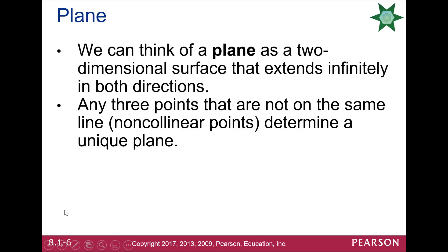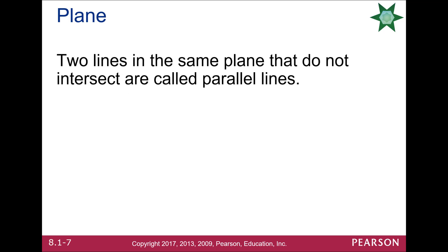A plane is two dimensions, extends indefinitely in both directions. Any three points that are not in the same line, what we call non-collinear, form a plane. So AB and C here. Like I said, this is your tabletop, a roof, cover of a book, anything like that.